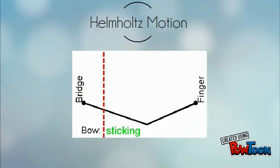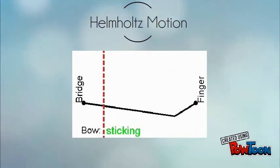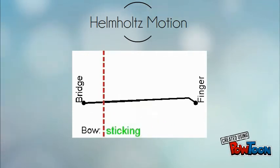This is called the Helmholtz motion. The vertex of that little corner in the image is called the Helmholtz corner, named after him.